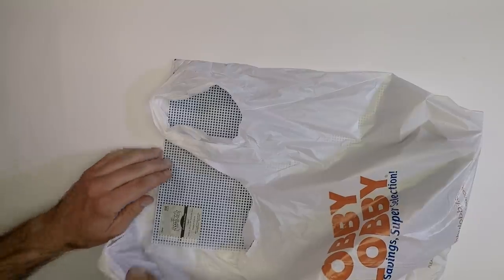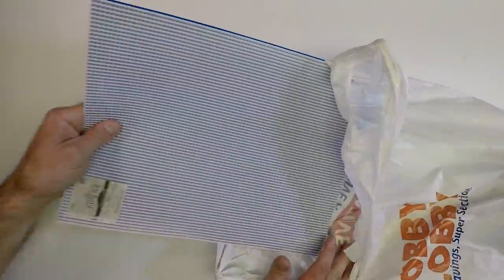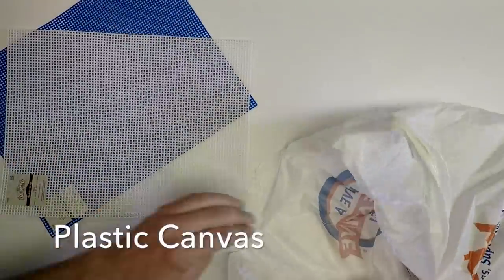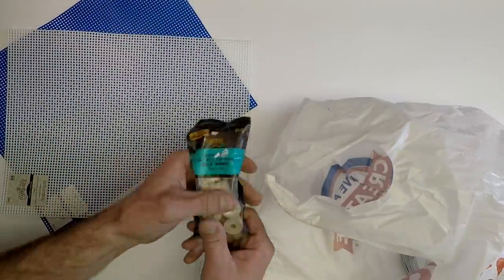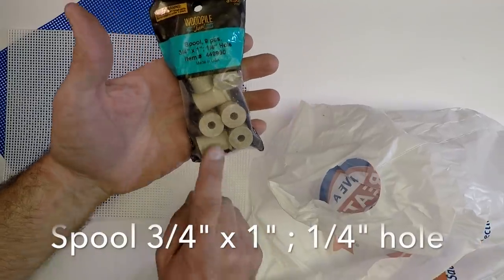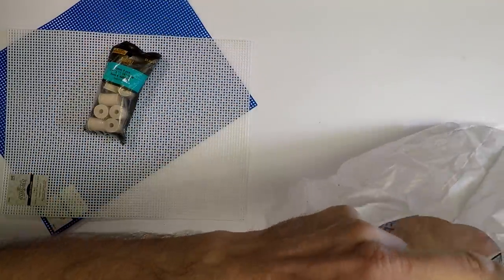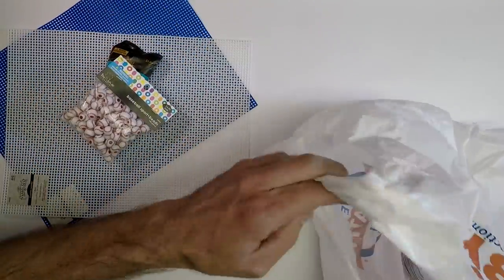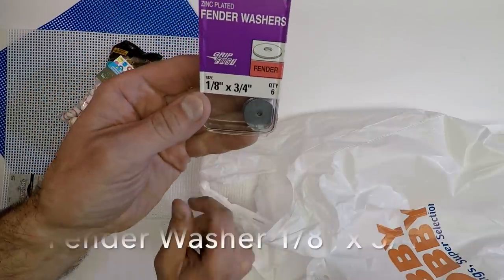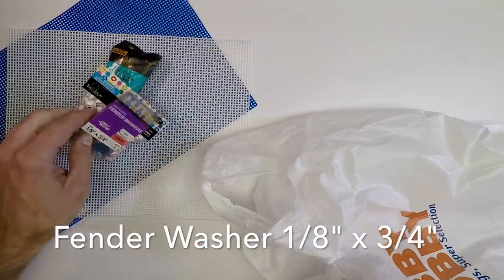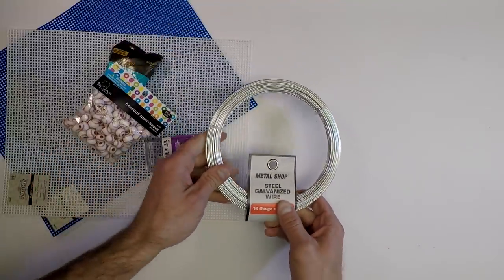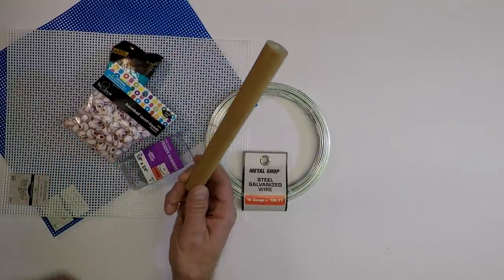So I've done some shopping at Hobby Lobby and Menards. I picked up this plastic canvas in cubby blue and white. And I've got these wooden spools, plastic baseball beads, fender washers, 16 gauge galvanized steel wire, and a wooden dowel. We're going to need about 3 inches of that thing.